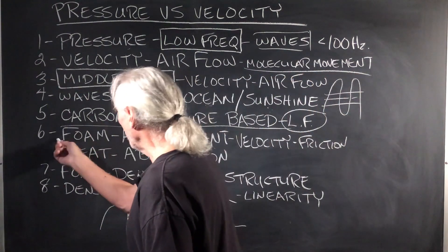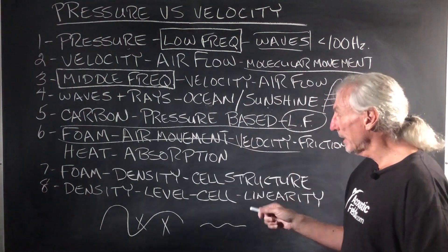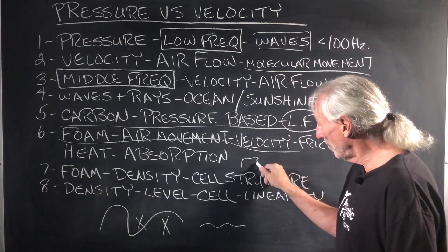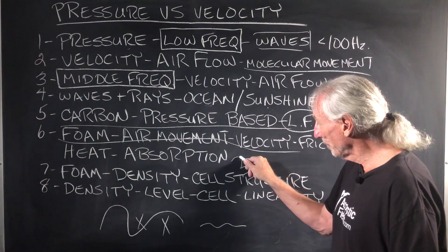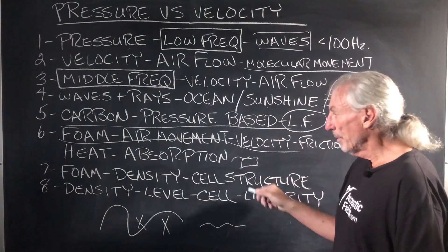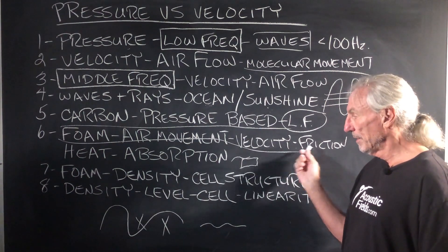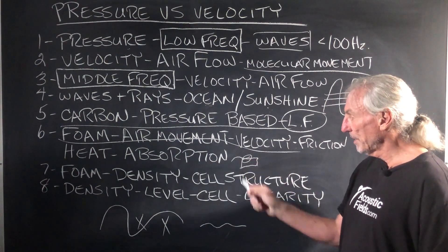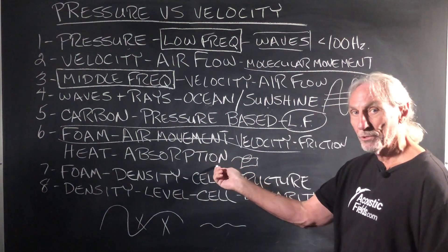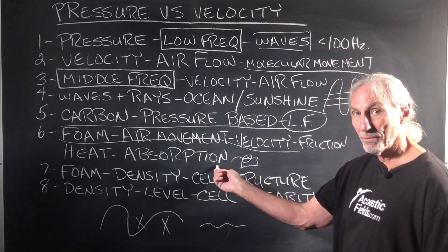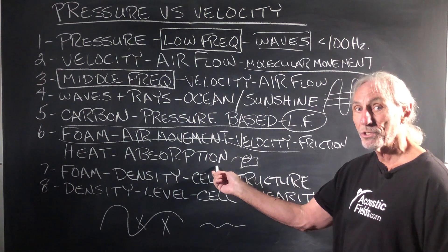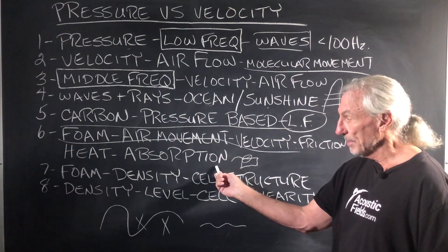Carbon is pressure-based. Foam works on air movement or velocity. We have a piece of foam. The air moves across the surface. When it moves across the surface, we get friction. We have two substances touching each other, so we get friction. Friction produces heat, produces absorption, energy change, transformation. Not energy destruction, energy change.